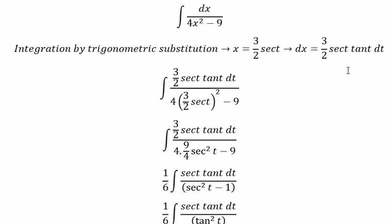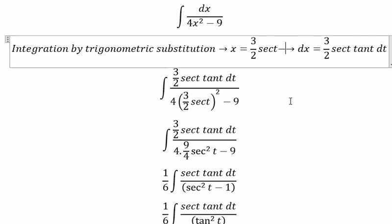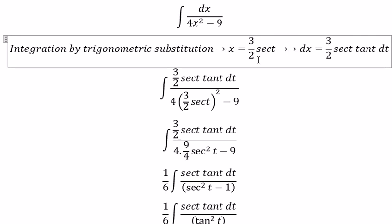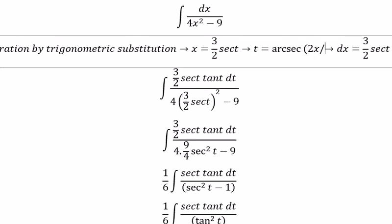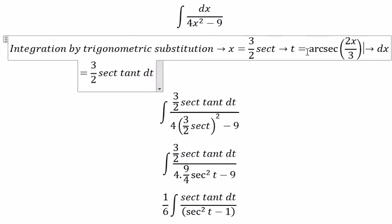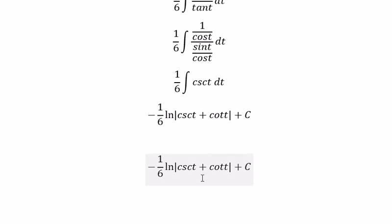We need to go back here. We divide both sides with 3 over 2, and you got about t equal to arc secant of 2x over 3. So we put this one in here.